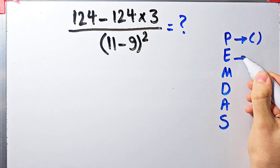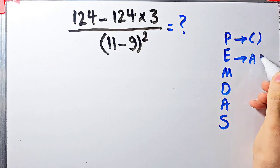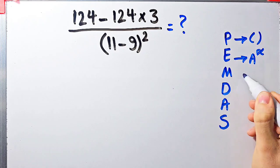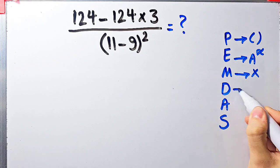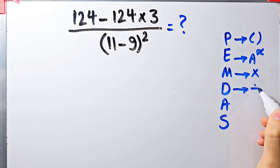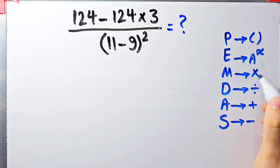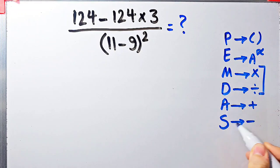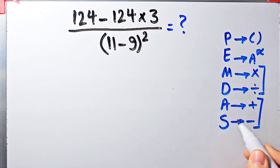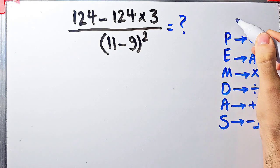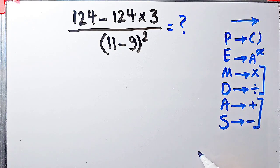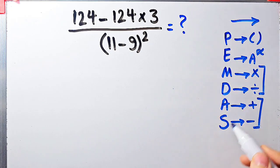In PEMDAS: P stands for parentheses, E stands for exponent, M stands for multiplication, D stands for division, A stands for addition, and S stands for subtraction. Multiplication and division have the same level of priority; addition and subtraction also have the same level of priority. When we have both in an expression, we start from the left.